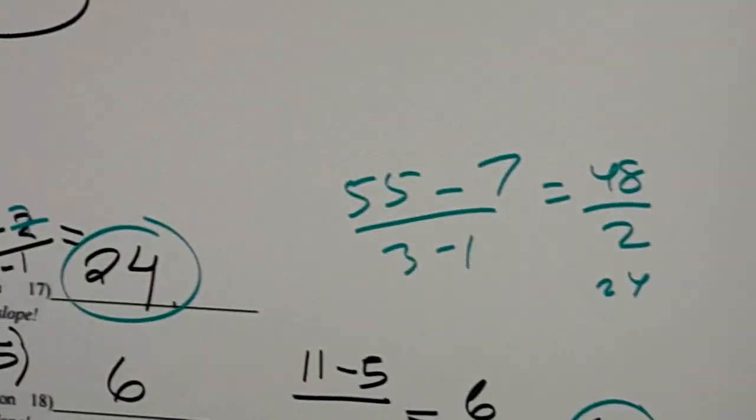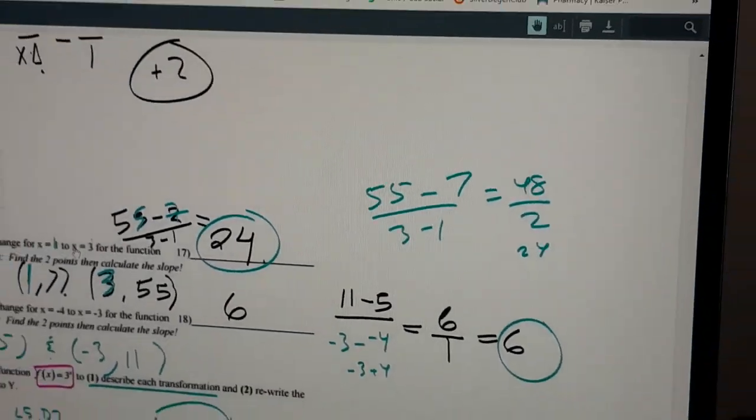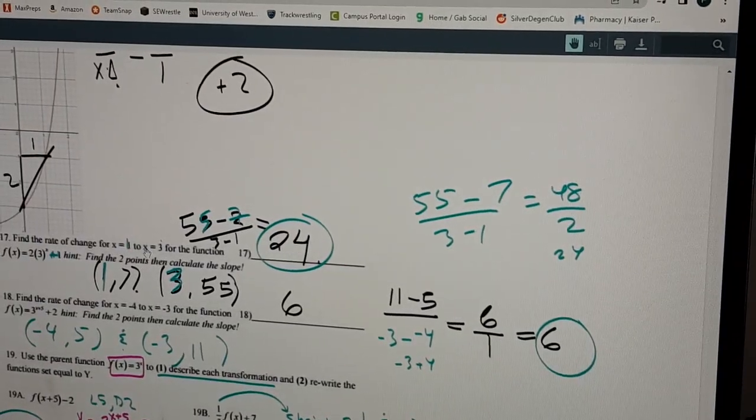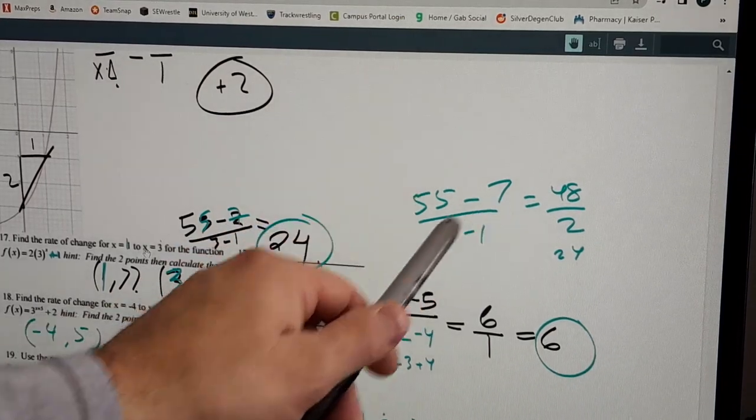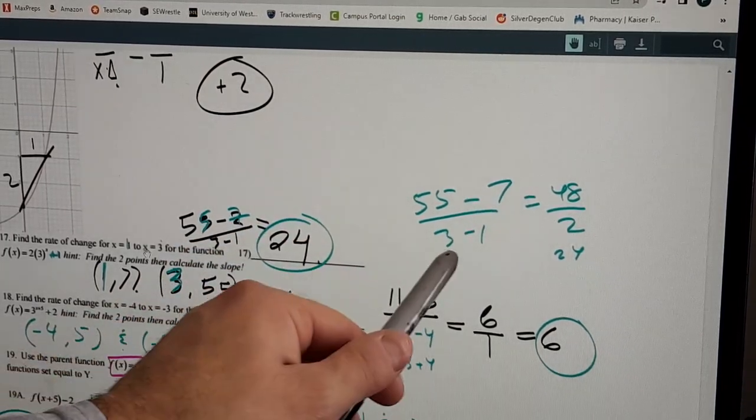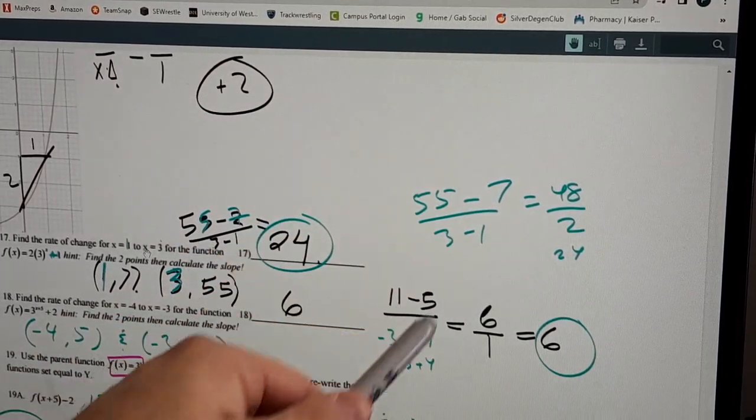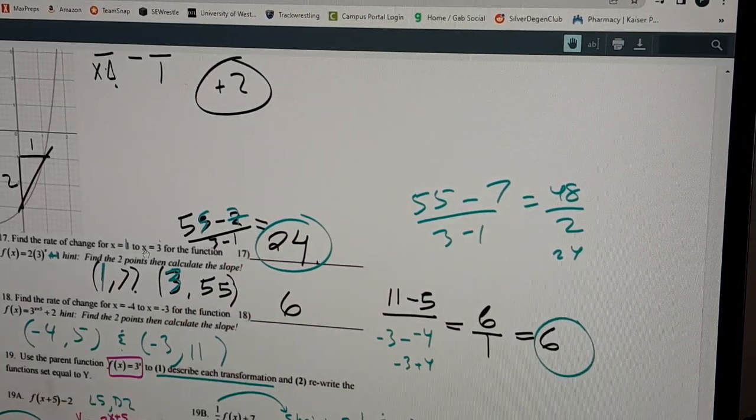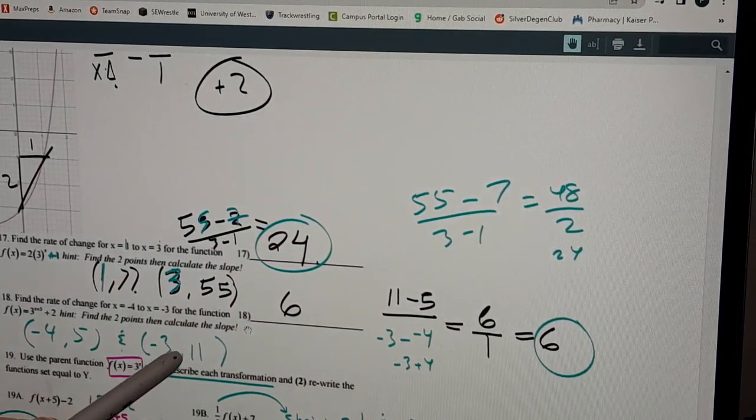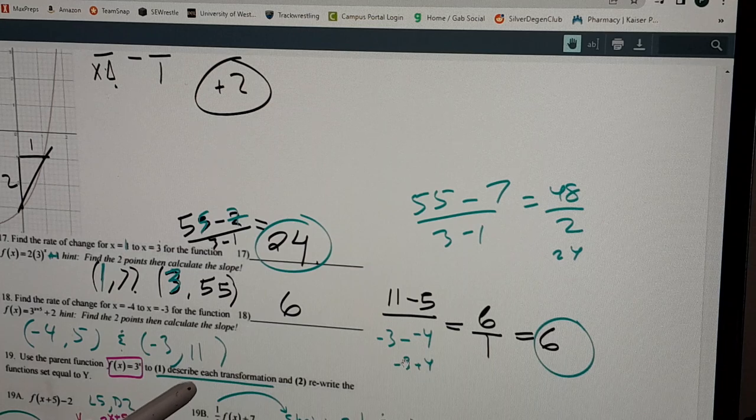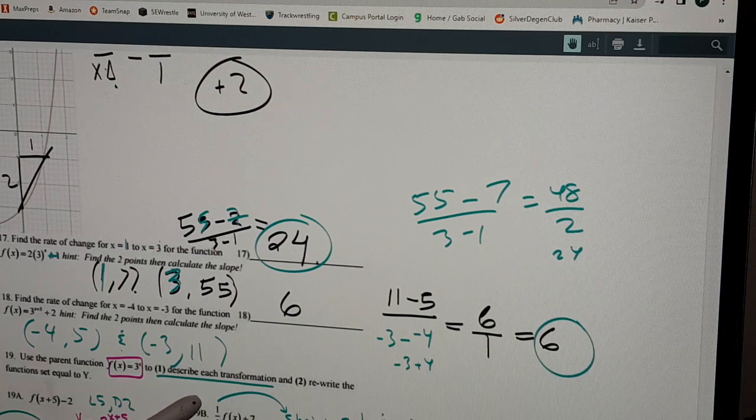So for example, the 55, let me try and zoom back out. You'll see that 55 minus 7, the 55 was with the 3, and 3 minus 1. So having the same order, that gives you the rate of change. Do the same strategy for number 18. And then let's go ahead and look at these last couple.